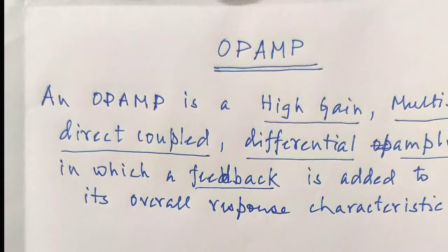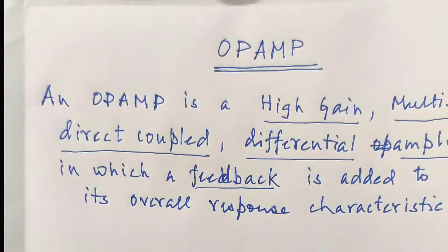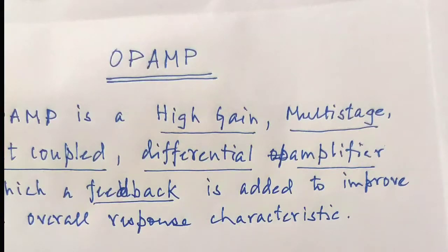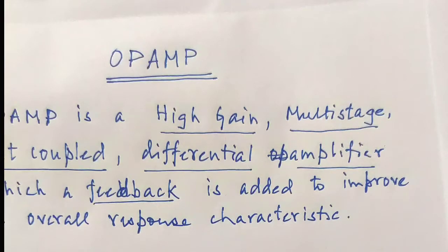Every stage of an amplifier should be coupled with the previous stage using either a resistance, a capacitor, or a combination of R and C. But in an op-amp, the different stages are directly coupled with each other. As for the differential amplifier — when an amplifier can amplify the difference of its input voltages, it is called a differential amplifier. An op-amp is basically a differential amplifier as it can amplify the difference of its input voltages.